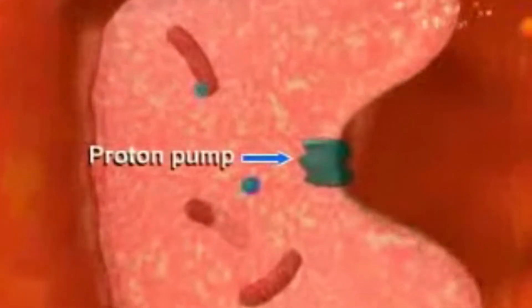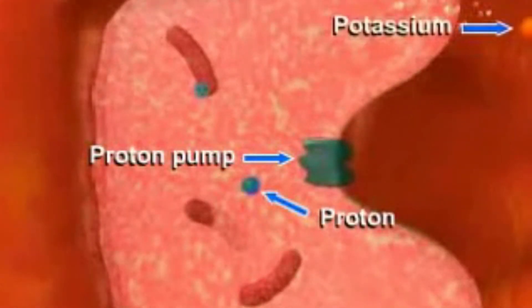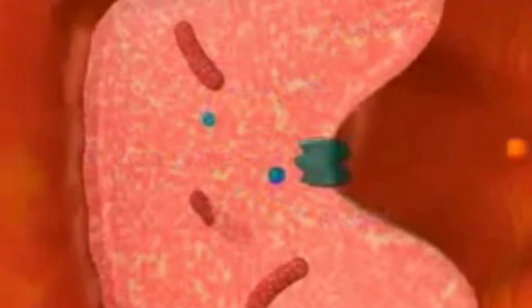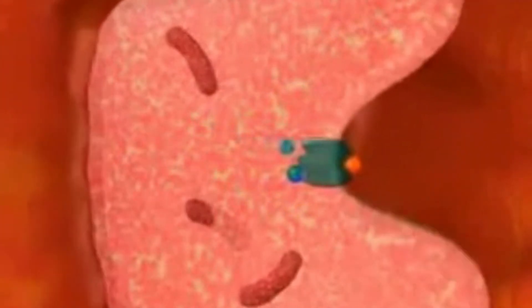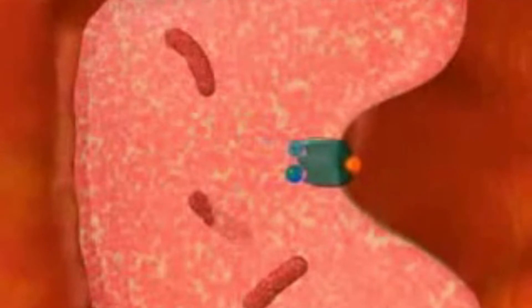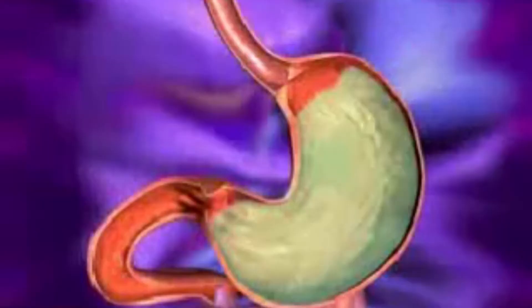The proton pump present in parietal cells is responsible for acid secretion. The proton pump is located in the luminal side of the parietal cell. The proton pump actively transports protons into the stomach lumen and potassium back to the parietal cell, with hydrolysis of ATP.